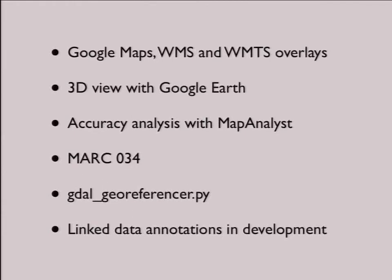Libraries are usually interested in MARC 034 — MARC is a standard for metadata for libraries, and this field gives the bounding box of the map. We also have a tool called GDAL GeoReferencer. It's a Python script — if you have a map in Georeferencer that's already geo-referenced, you can call this script on your master TIFF or ECW file. You give the identifier of the map in Georeferencer and the script will download the list of control points and create a VRT file that adds these control points to your master file, so you can warp it or do something else with it.